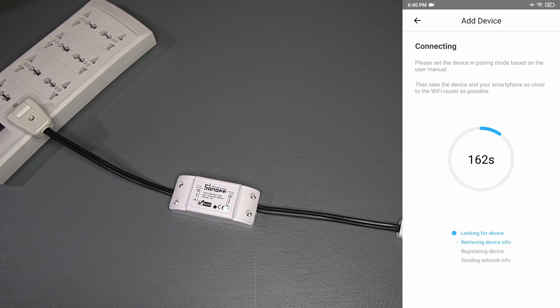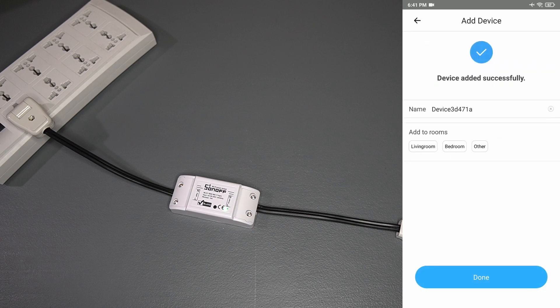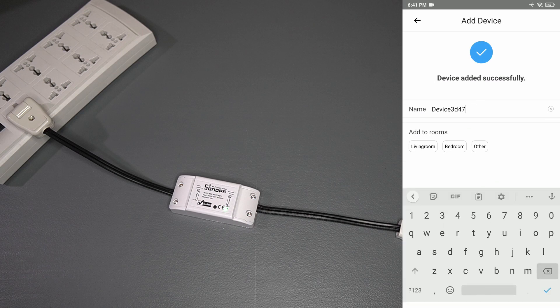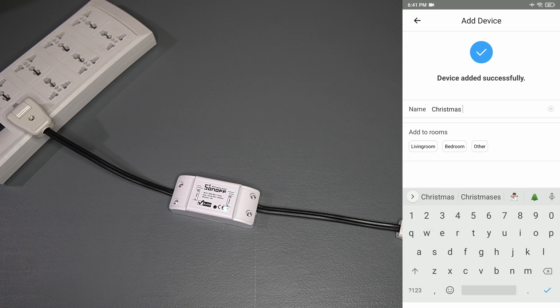By the way, the Sonoff Basic has a model with RF if you want to use RF remotes. Since the Sonoff needs the internet in order to function, once your internet is down, you can no longer use the Sonoff. The main advantage of the RF remote is that it lets you turn your device on or off even without the internet.